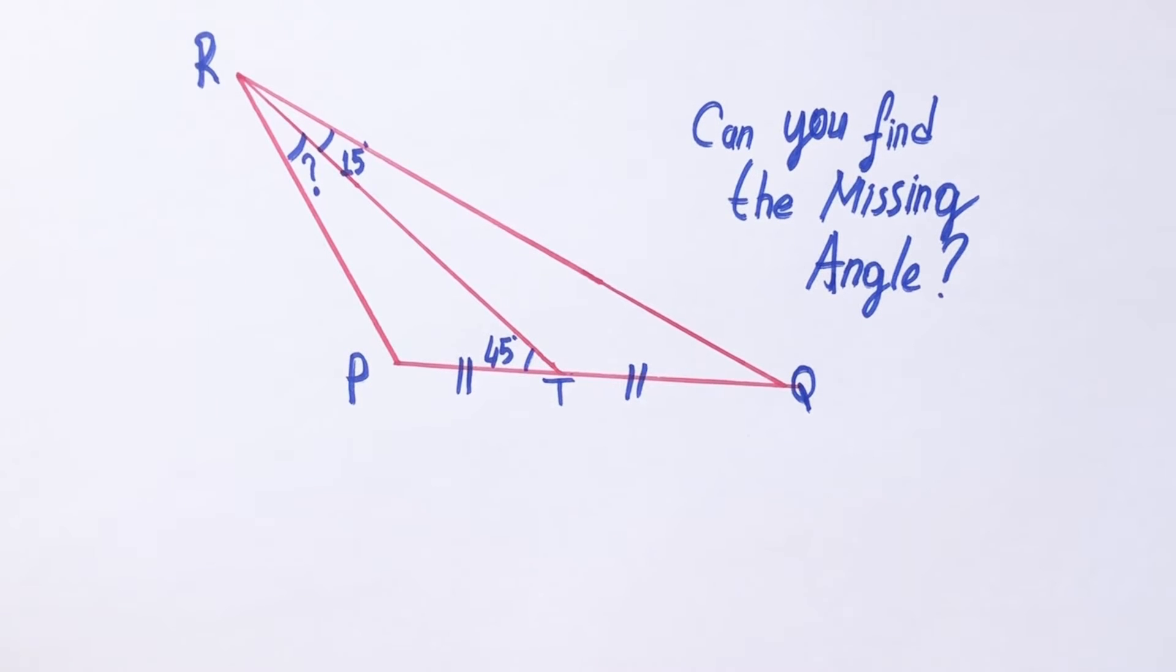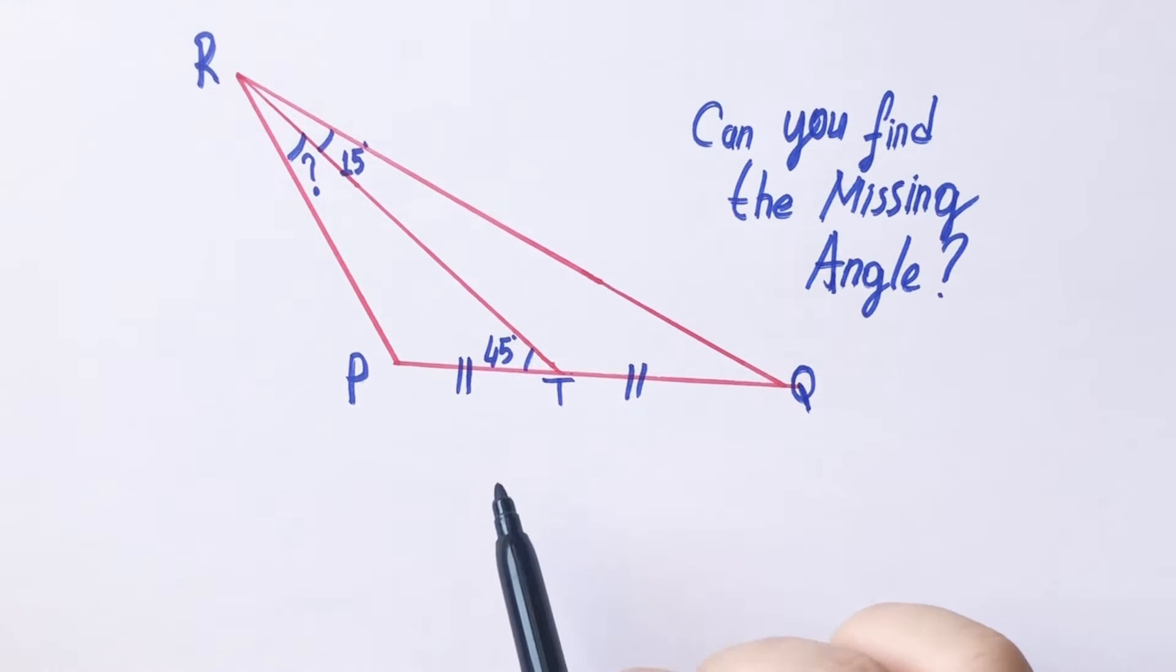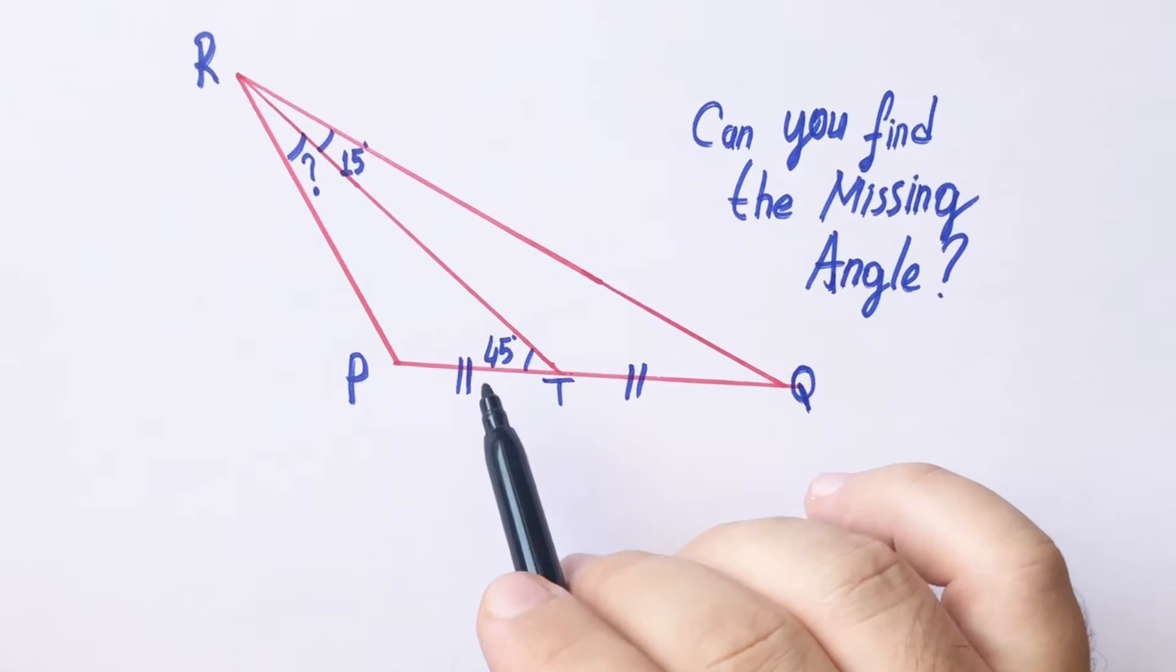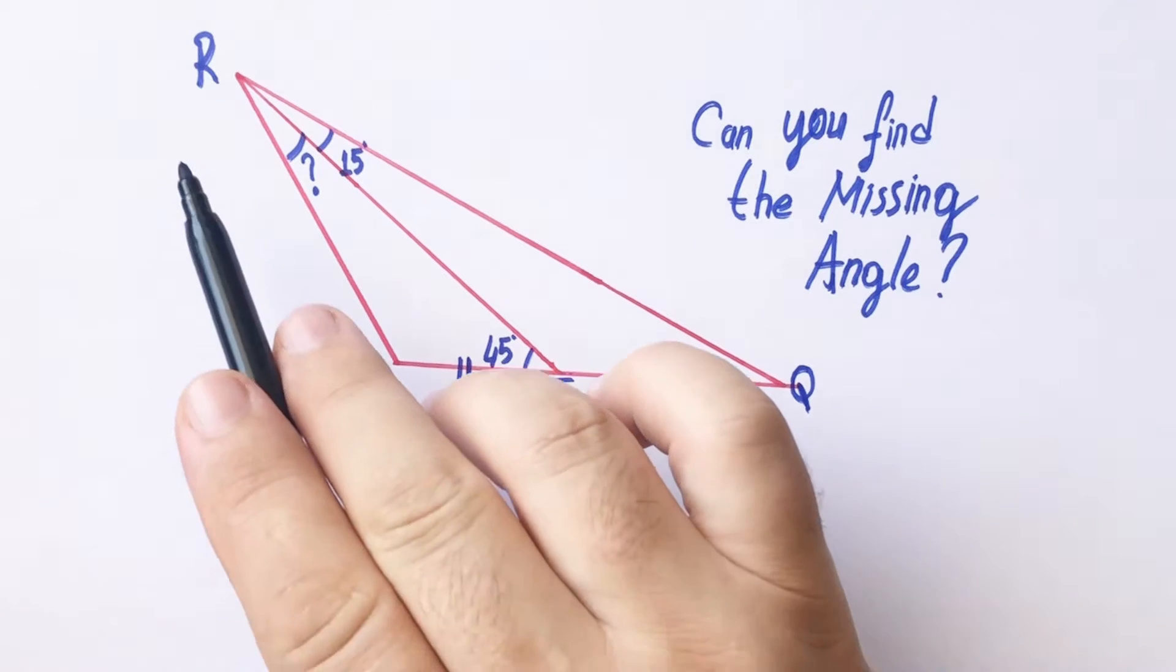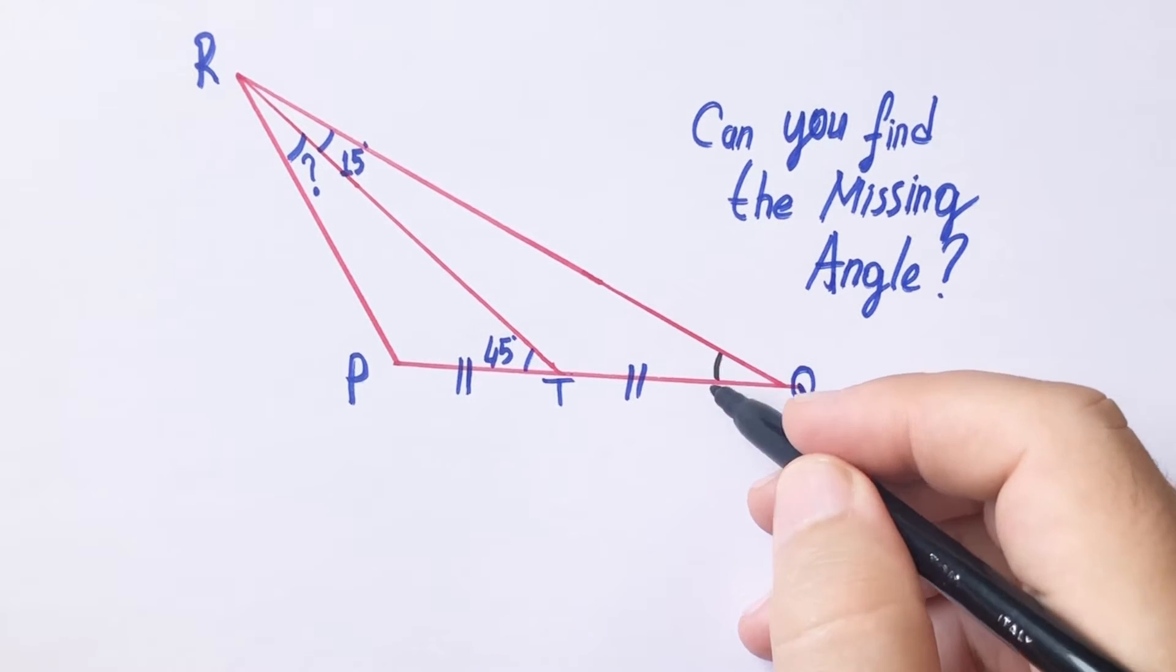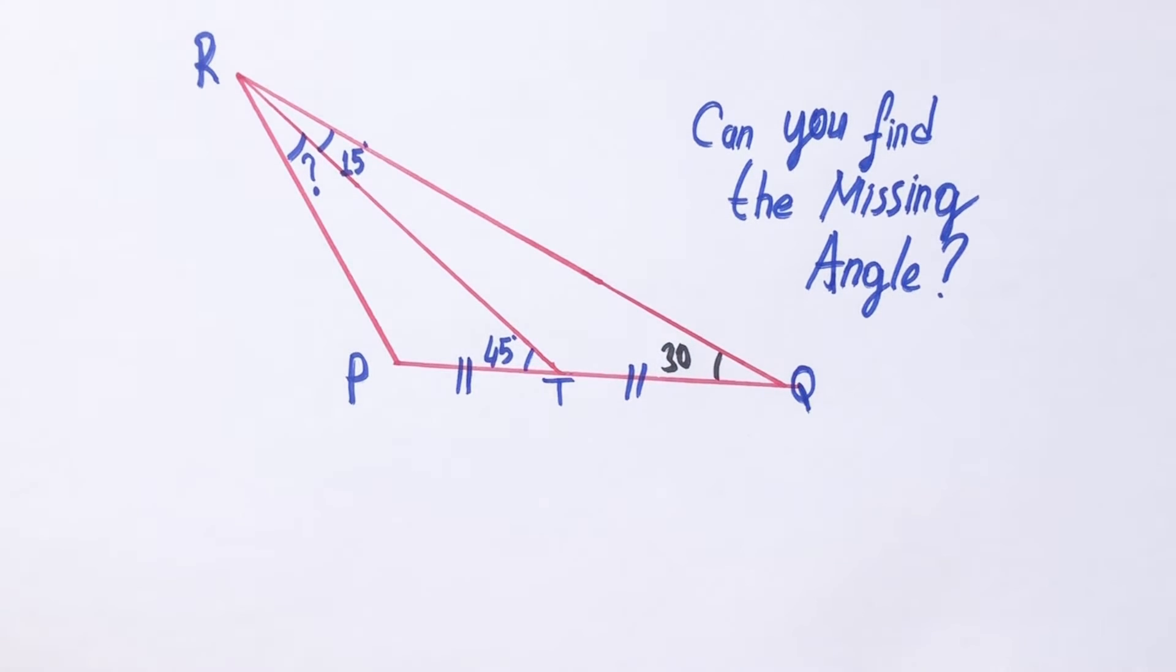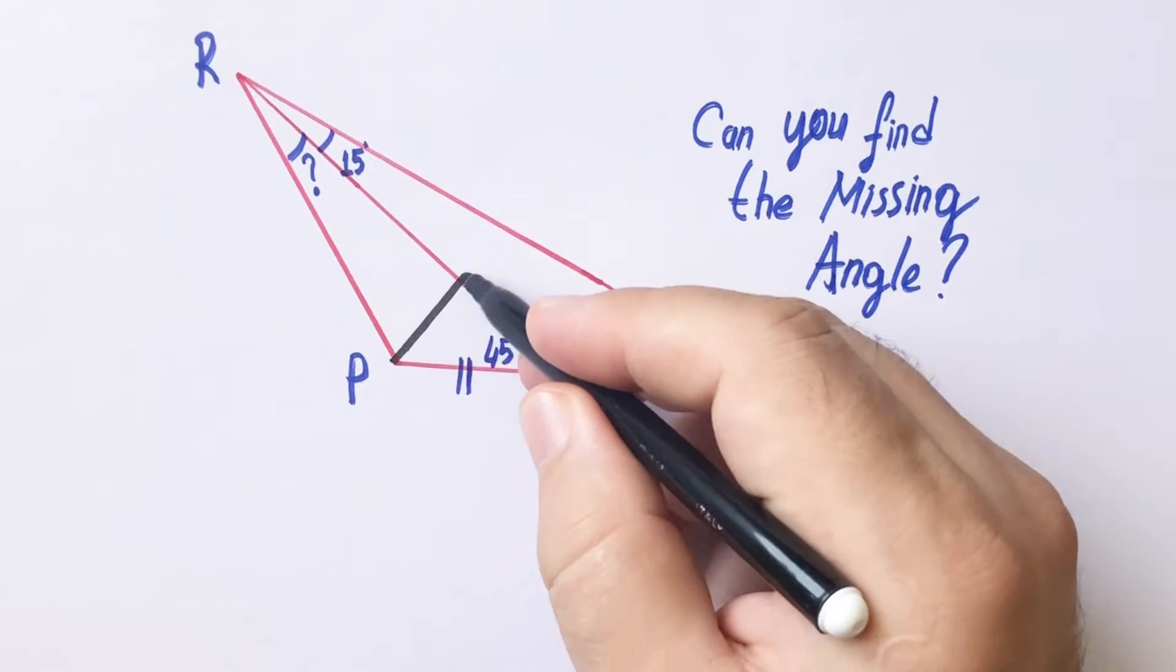Hello everyone, in this video we have a triangle and two lengths are equal. These two angles are given and angle PRT is asked. First step, here is 45 degrees, therefore this angle must be 30 degrees.